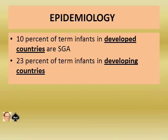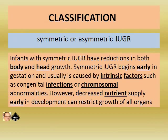Epidemiology of SGA: 10% of term infants in developed countries are SGA, while 23% of term infants in developing countries are SGA.